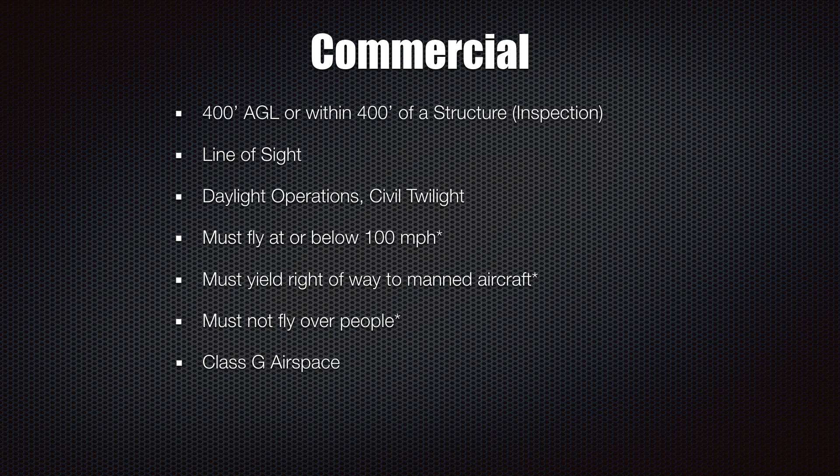The second category is commercial operations, which a lot of people refer to as 107 operations or Part 107 operations. All these operations fall under a code of federal regulations — 14 CFR Part 107. These rules govern how that person is going to fly. The altitude limit is 400 feet AGL, or within 400 feet of a structure if you're doing an inspection. So if you have a structure that's a thousand feet tall, the FAA actually allows you to go to 1,400 feet to do an inspection or photography of that structure, but you must stay within 400 feet of the structure at all times.